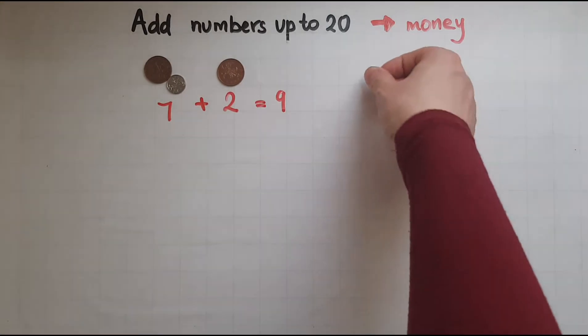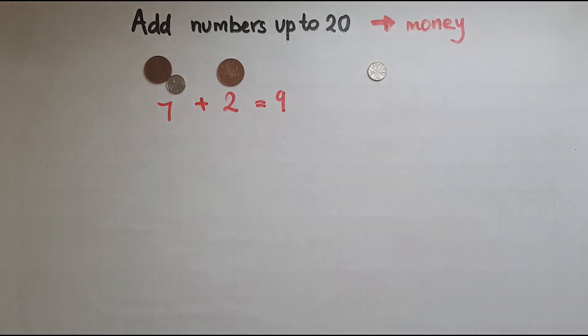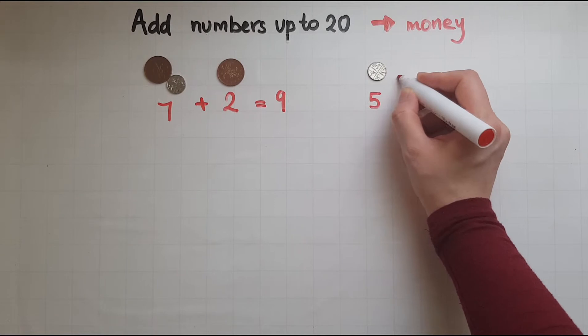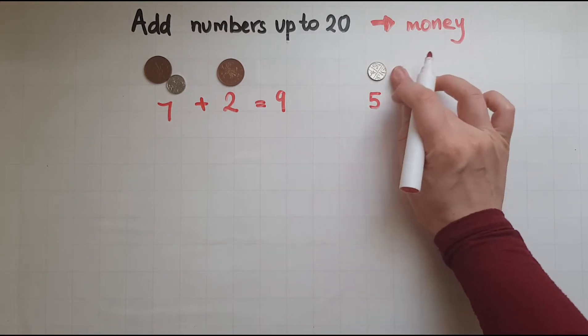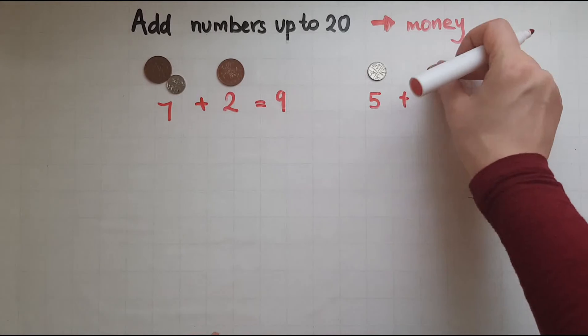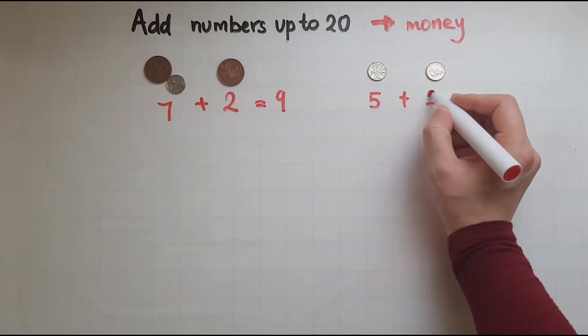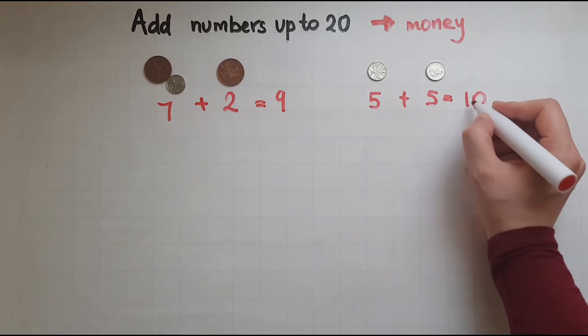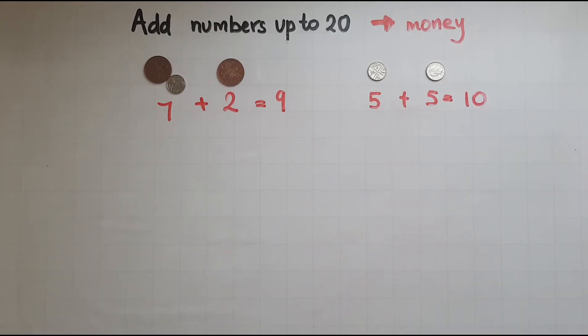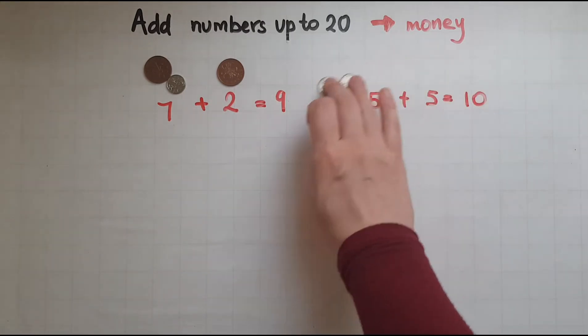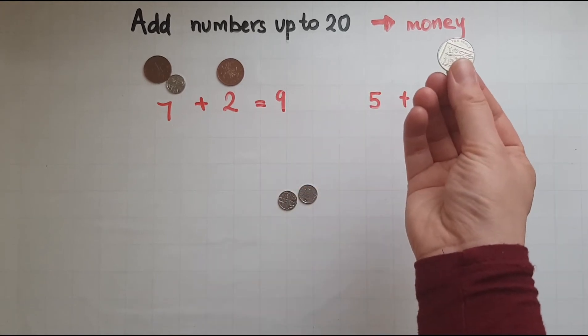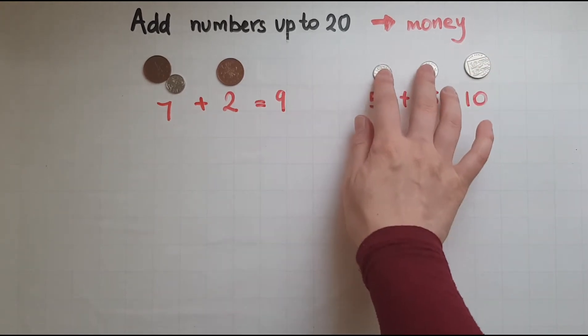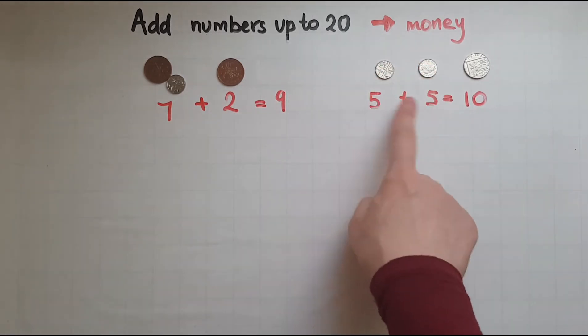And I spent five pence to buy a plastic bag and another five pence to buy another plastic bag. So all together that is five and five makes ten. So those two coins are the same as this one. So five and five makes ten.